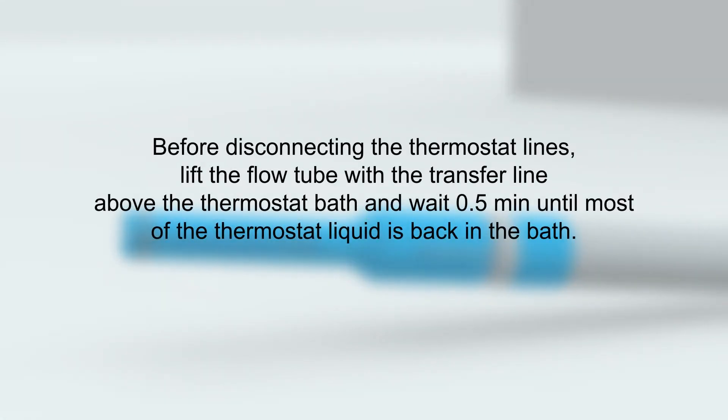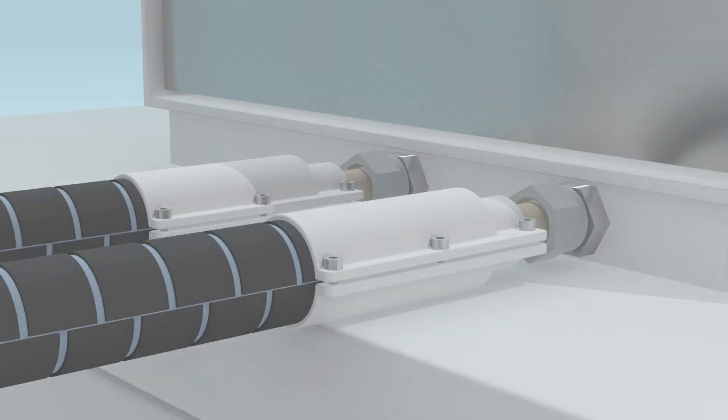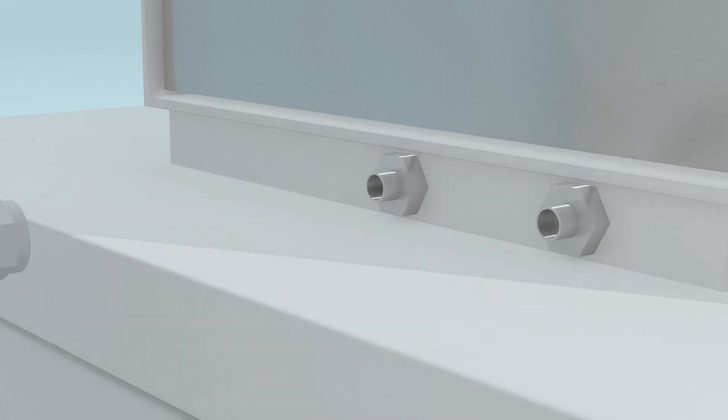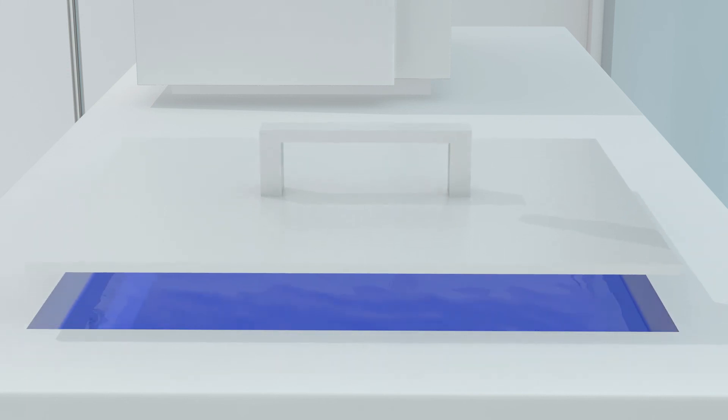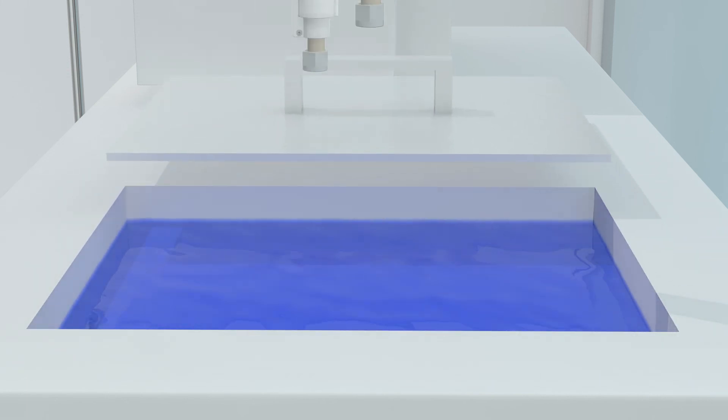Before disconnecting the thermostat lines, lift the flow tube with the transfer line above the thermostat bath and wait for half a minute so it drains. Then disconnect the inlet and outlet to the thermostat and suspend the connectors above the bath so that the thermostat liquid drains into the bath.